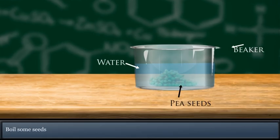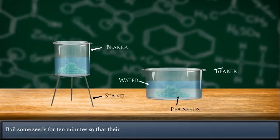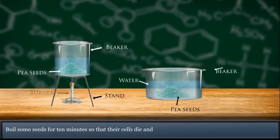Boil some seeds for 10 minutes so that their cells die and they stop germinating.